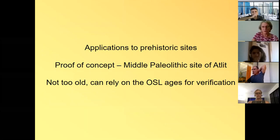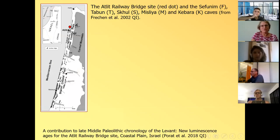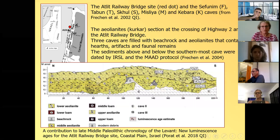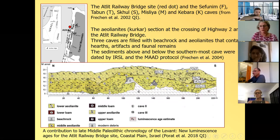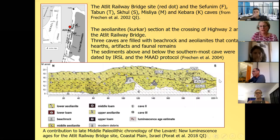Let's go now to prehistory. I've talked for a long time. And I'll first show a site which is not so old, just as a proof of concept, where we tested different signals on the same samples. And we chose a site which is not too old, so we can rely on the OSL ages for verification. The site is called Atlit Railway Bridge site, or Atlit for short. It's located on the coastal plain, very close to some of the well known cave sites in the Carmel mountain. And here is a section, note it's 20 meters of the aeolianites, which are exposed along this road. And the section was dated some years ago by Frechen and colleagues by IRSL at 50 degrees.